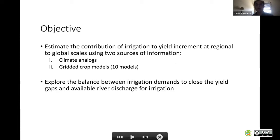Using two main sources of information: the first one based on climate analogues, I will explain later what it is, and the second source of information are gridded crop models. Here we will consider 10 process-based crop models.